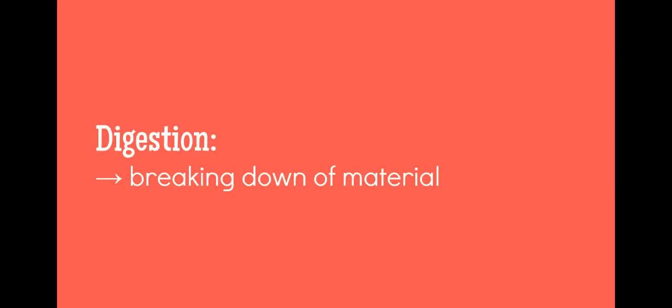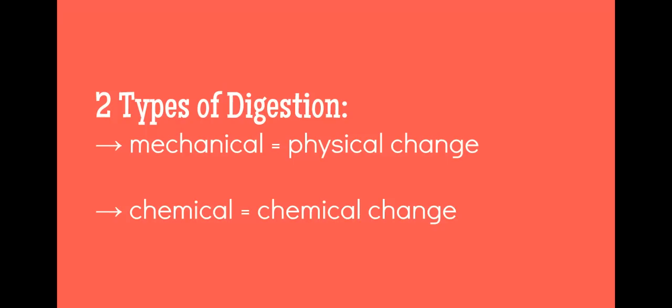So back to the types of digestion. First of all, digestion, all it means is that it's a breaking down of material. So any time you hear someone say, your body digests food, it just means your body breaks down food into smaller molecules. There's lots of ways that it does that. Three types of digestion are mechanical and chemical. And since you already know what physical and chemical changes are, this should be pretty easy for you.